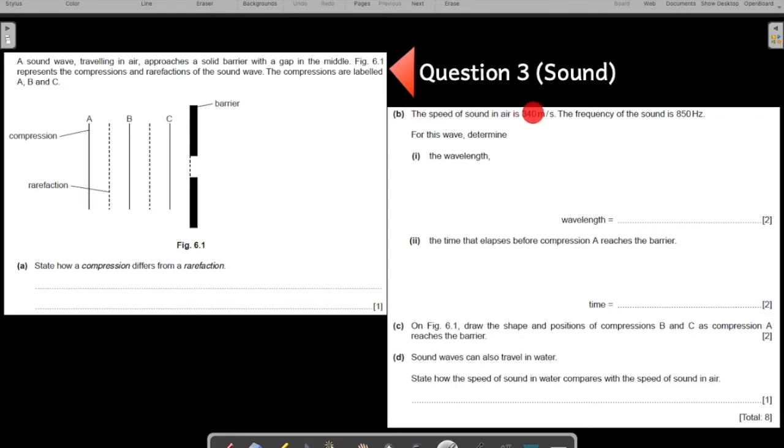The speed of the sound in the air is given to you. I am on part B now. Speed of the sound in the air is given and the frequency of the sound is given. For this wave, determine the wavelength. How do you determine the wavelength when you are given the speed and the frequency? You use the wave equation. V is equal to F lambda. So lambda will be 340 over 850. You will have to divide these two numbers to get your answer.